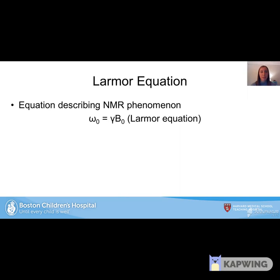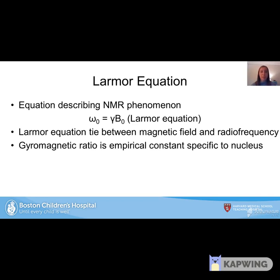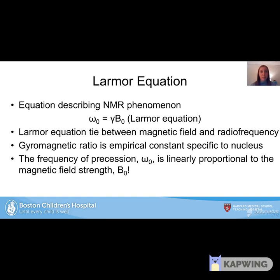This entire phenomenon is described by the Larmor equation: omega-naught, the precession frequency, equals the gyromagnetic ratio multiplied by the magnetic field B-naught. The Larmor equation is the tie between the magnetic field and the radio frequency. The gyromagnetic ratio is an empirical constant specific to the nucleus being examined. The frequency of precession, omega-naught, is linearly proportional to the magnetic field strength, B-naught. This will be important later when discussing gradients.